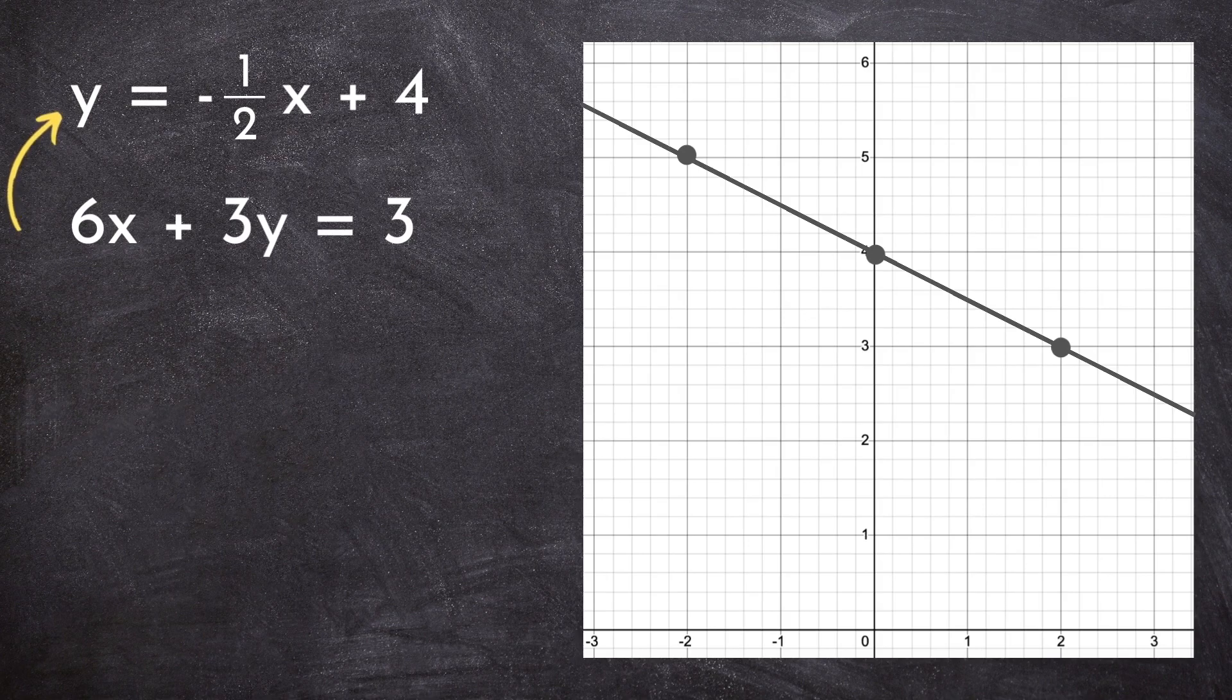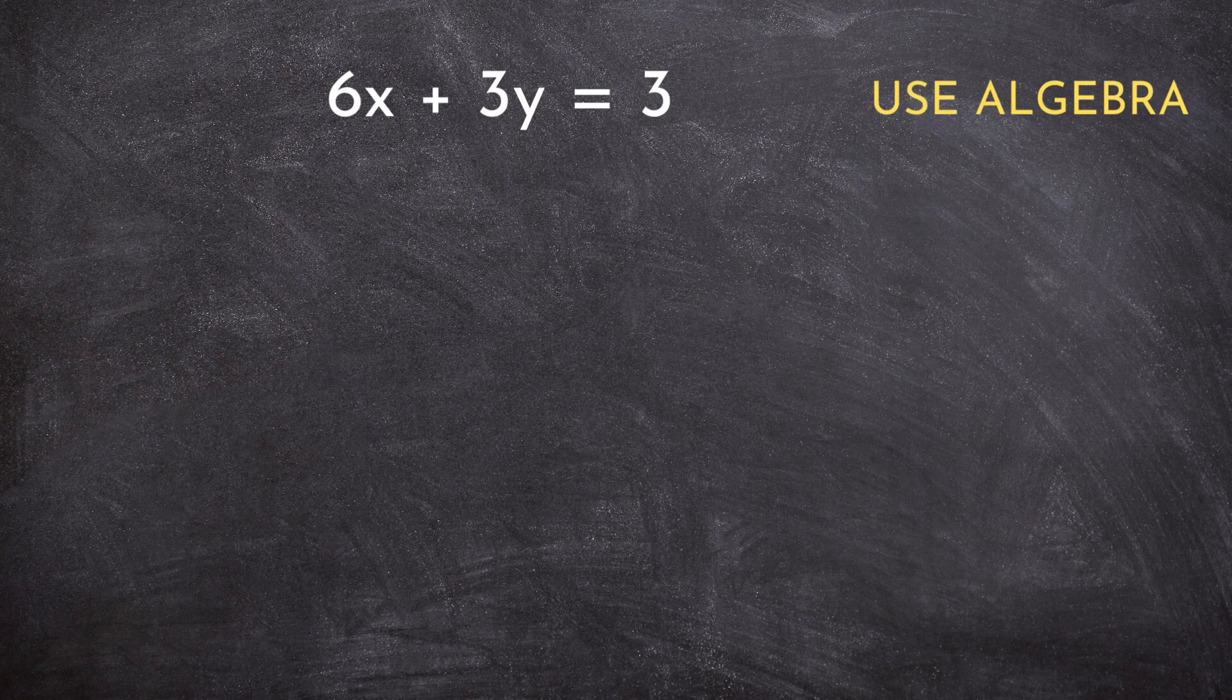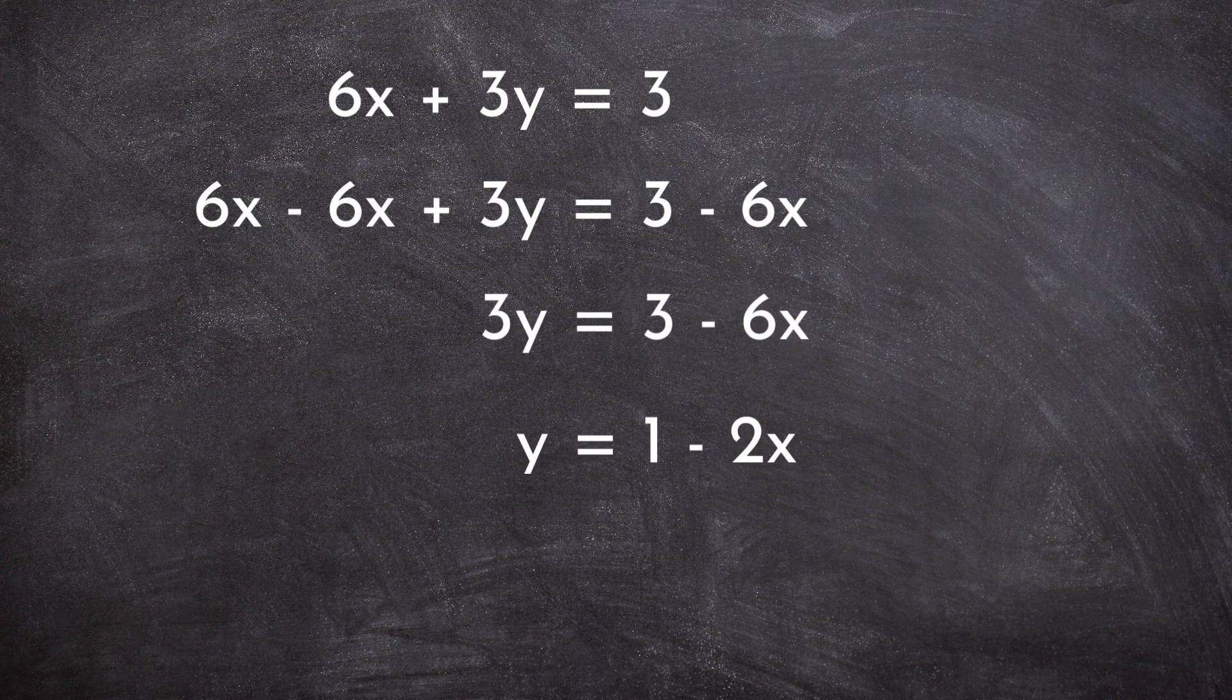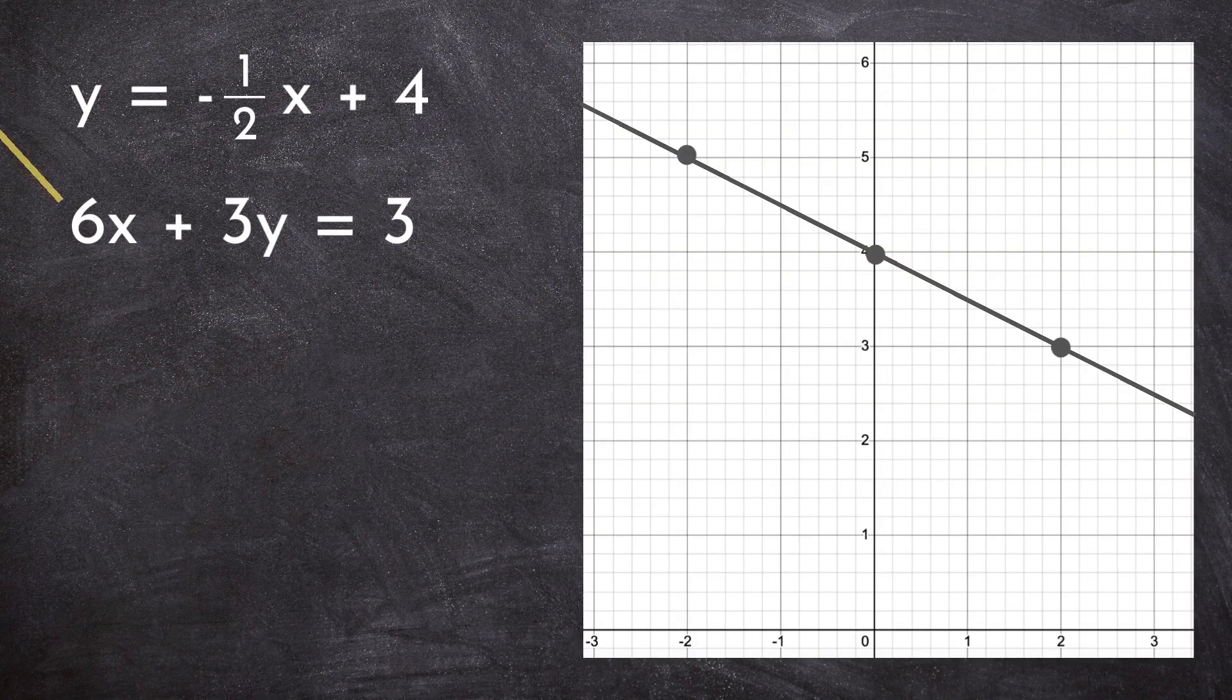Since slope-intercept form has y by itself, we want to make this standard form line look that way by solving for y. We use algebra here to first subtract 6x to the other side. Next, we divide by three on both sides. And there you have it, slope-intercept form.